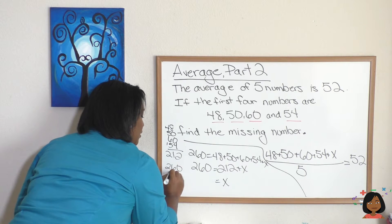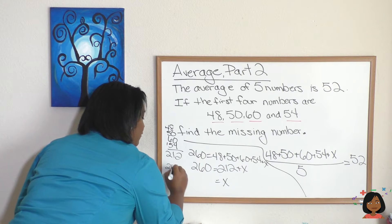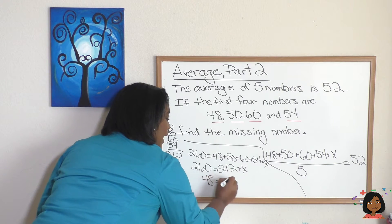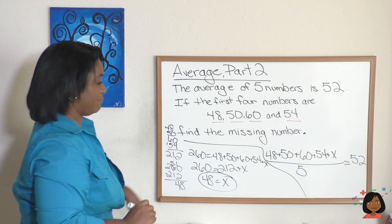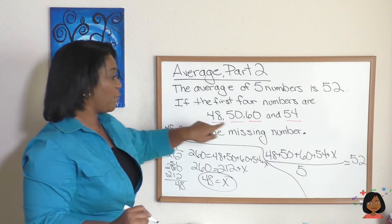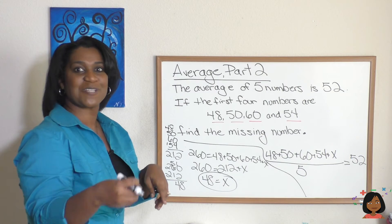260 minus 212. 48 is our missing number. Makes sense. 48, 50, 60, 54, and 48 helps bring that number down. Makes sense.